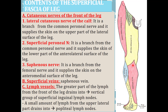The lateral cutaneous nerve of the calf is a branch of the common peroneal nerve, and it supplies the skin on the upper part of the lateral surface of the leg. Number two is the superficial peroneal nerve, which is also a branch of the common peroneal nerve.